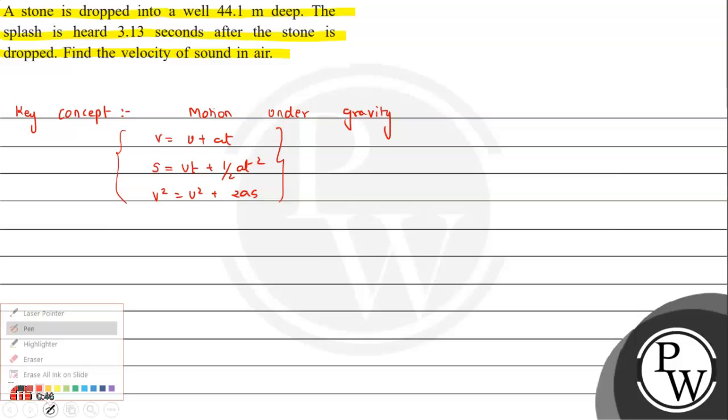If we understand the question here, let's suppose we have a well. We have a well, and at 44.1 meter depth water has been present. So here we drop the stone.